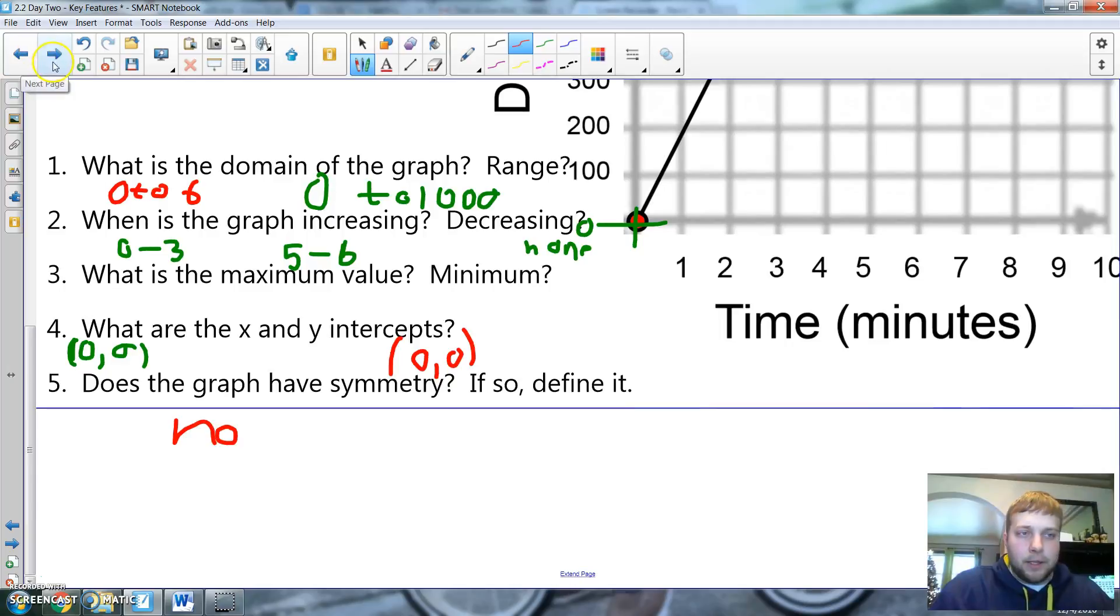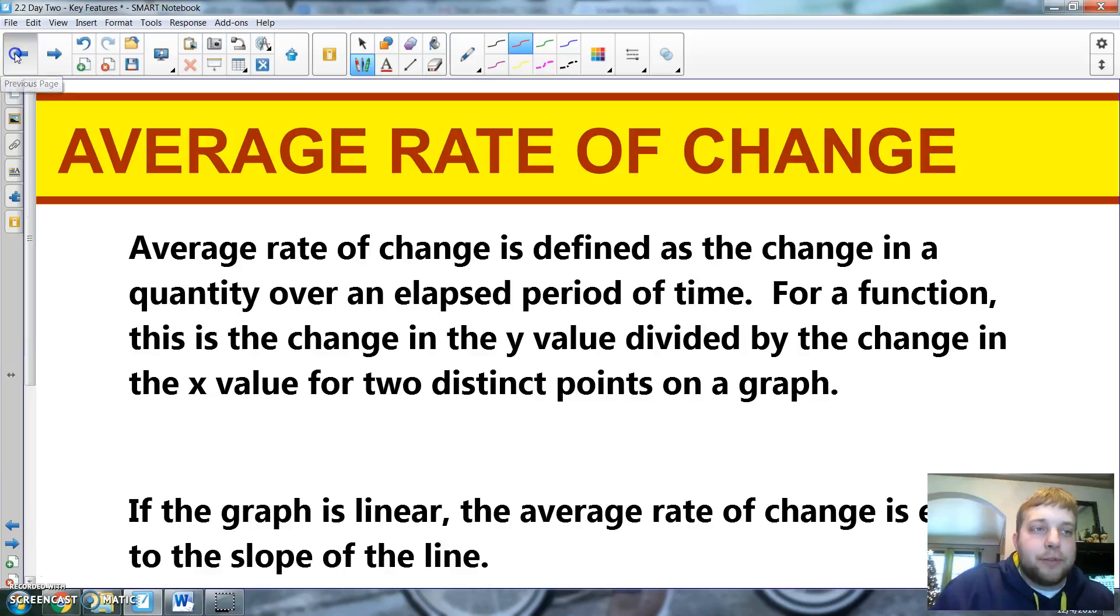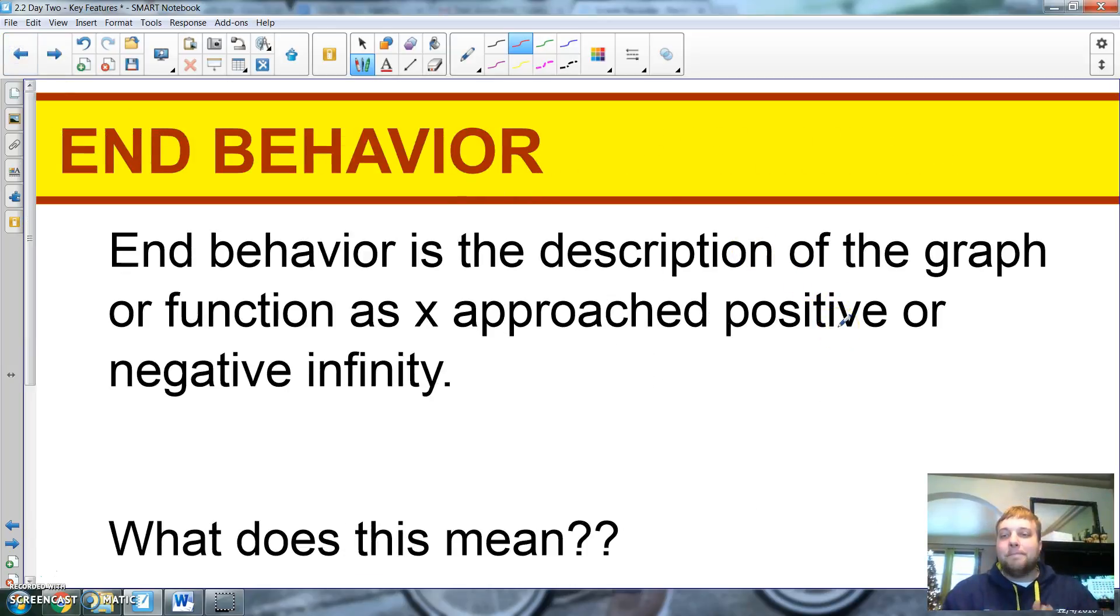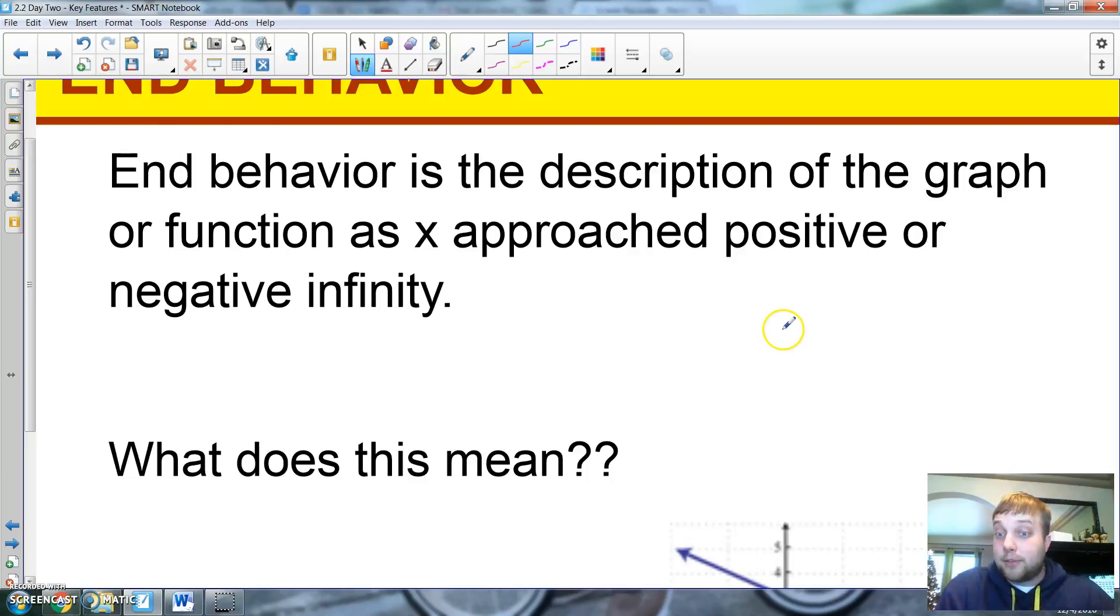All right. Next. Last two things. End behavior. And then the last one is average rate of change. End behavior is basically looking at the ends of both graphs and seeing how do they end. Guys, give it up. There's my wife. Good job. You're right on my shoulder. If I go like this, I can see you. That's going to be really hard for me to do, so I'm not going to. End behavior. It's how I end. And basically, it's not how you begin. It's how you end, right?